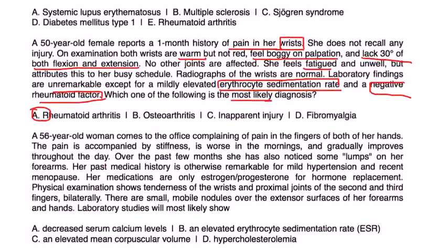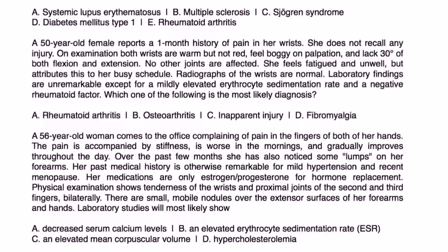Next question. A 56-year-old woman comes to the office complaining of pain in her fingers of both hands. Pain is accompanied by stiffness that has worsened the mornings and gradually improved throughout the day. Over the past few weeks, she has also noticed some lumps on her forearms. Physical exam shows tenderness of the wrists and proximal joints of the second and third fingers bilaterally. Small nodules over the extensor surfaces of the forearms and hands are there.